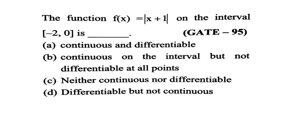The function f(x) = |x+1| on the interval (-2, 0) is: continuous and differentiable; continuous on the interval but not differentiable at some points; or neither continuous nor differentiable. So this is a modulus function.